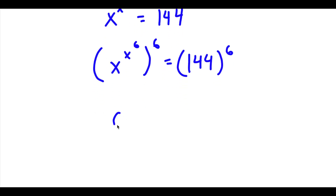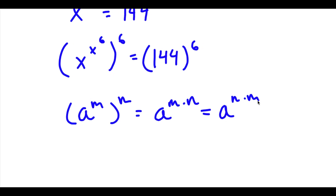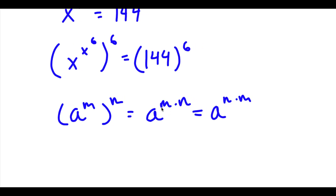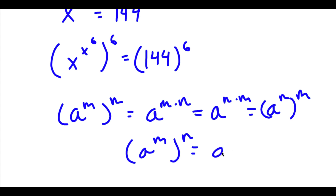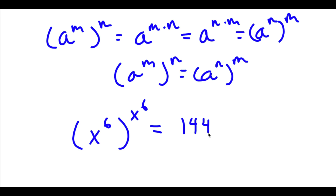Now if I have something in the form a to the power of m, to the power of n, this is equal to a to the power of m times n. And a to the power of m times n is interchangeable, so we can rewrite this as x to the power of 6 to the power of x to the power of 6, and this is still equal to 144 to the power of 6.